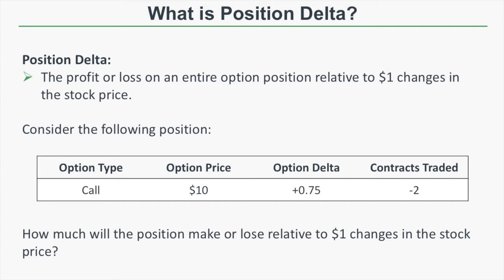Let's say we have a call option that is worth $10, and the call's delta is plus 0.75, and let's say you short two of those option contracts. Now based on the option's delta of positive 0.75, you know that the option's value is expected to increase by 75 cents for a $1 increase in the stock price and decrease by 75 cents for a $1 decrease. But that doesn't tell you how much money you're going to make or lose, so we have to look at position delta.